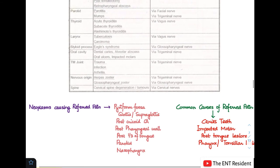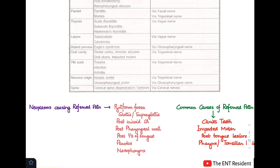Now the neoplasms which can cause referred pain are pyriform fossa, glottis and supraglottis CA, postcricoid CA, and posterior pharyngeal wall CA. These are all via the 10th cranial nerve. Posterior one-third of the tongue is via the 9th cranial nerve. Parotid and the nasopharynx.